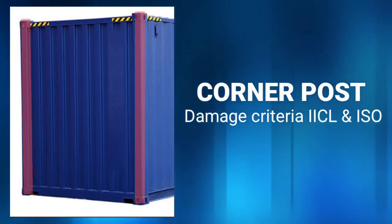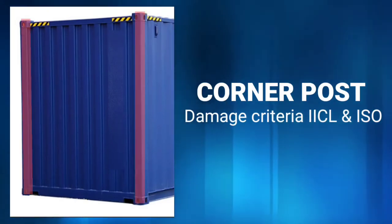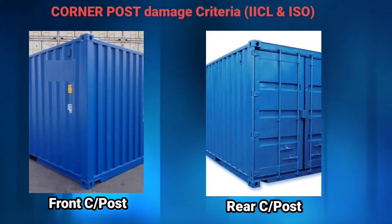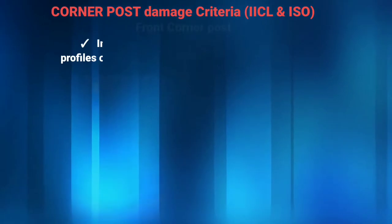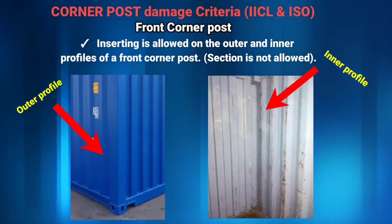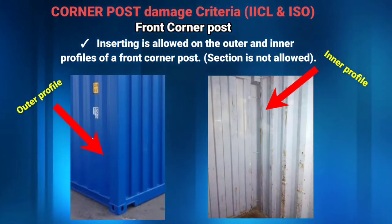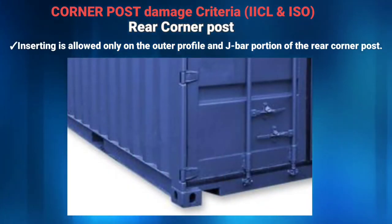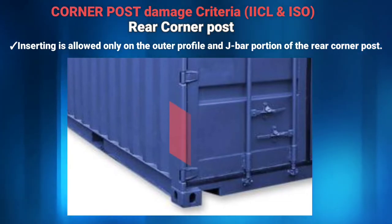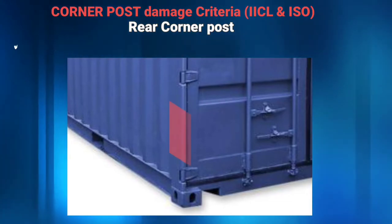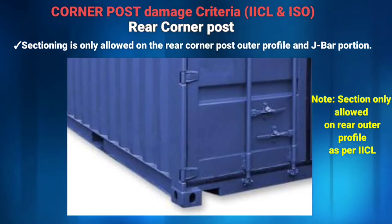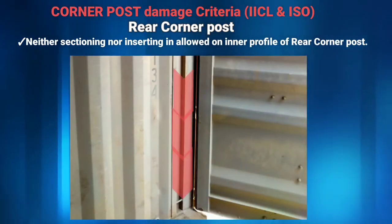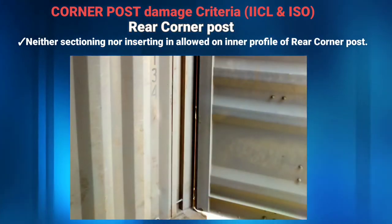Now let's talk about damage criteria of corner post. Damage in front and rear corner post is subject to different repair requirements. For the front corner post, inserting is allowed on the outer and inner profiles, but sectioning is not allowed. For the rear corner post, inserting is allowed only on the outer profile and J bar portion. Sectioning is only allowed on the rear corner post outer profile and J bar portion. Neither sectioning nor inserting is allowed on the inner profile of the rear corner post.